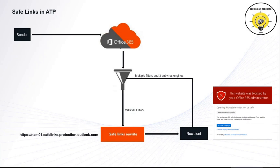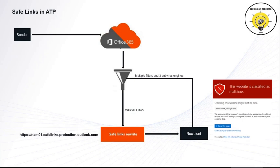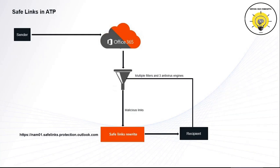If the URL points to a website that has been determined to be malicious, a malicious website warning page will open for the user. Within Safe Links there is an option: apply real-time URL scanning for suspicious links and links that point to files. If this option is enabled and the URL within the email points to a downloadable file, that file is also checked. If the URL is determined to be safe, the website will open.